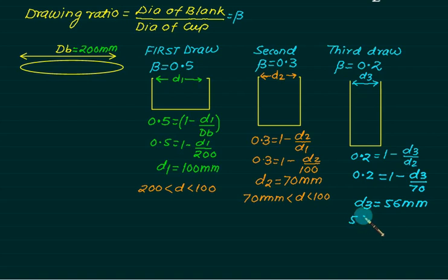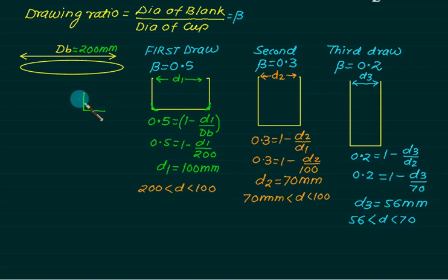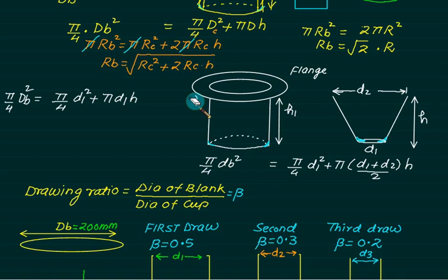In deep drawing, all die edges must be rounded — sharp edges are not permitted because sudden changes in geometry cause wrinkling. The die surface applies tensile forces on the walls and compressive forces on the flange, which can cause cracking at the bottom edge. The flange is held by a blank holder; if the blank holder pressure is too low, wrinkling will occur. The remedy is to increase the blank holder pressure.